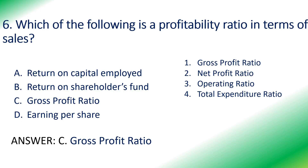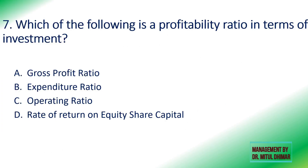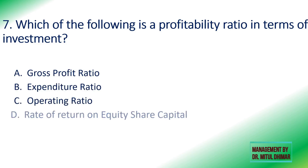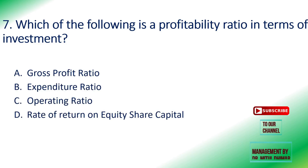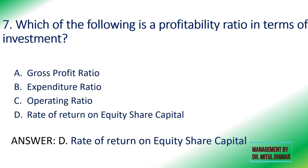Seventh: which is a profitability ratio in terms of investment — gross profit ratio, expenditure ratio, operating ratio, or rate of return on equity share capital? The answer is rate of return on equity share capital. Profitability ratios in terms of investment use the basic formula: profit divided by investment into 100, and only rate of return on equity share capital follows this formula among the options.